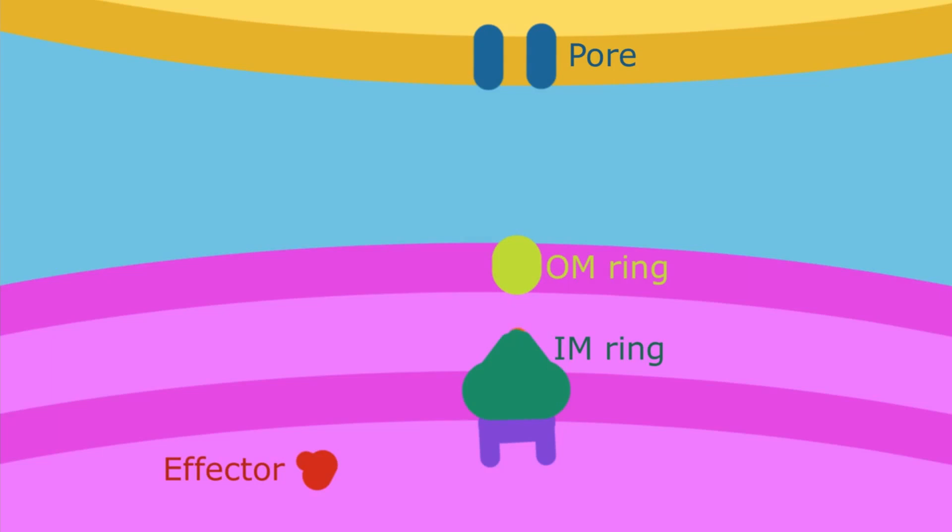First, let's discuss the goal of type 3 secretion, which is to transport this red effector protein to another cell. It could be either a bacteria or a human cell, for example.